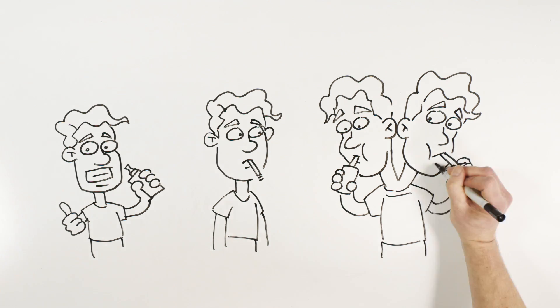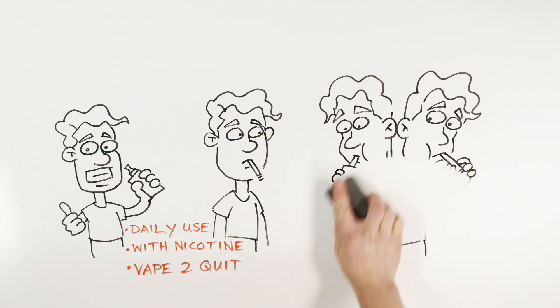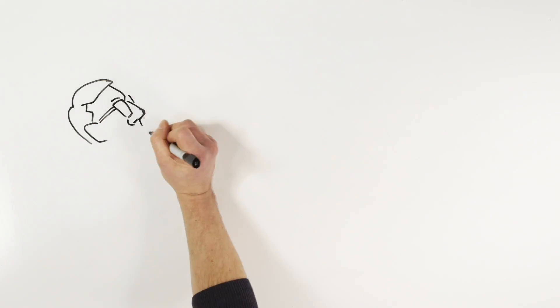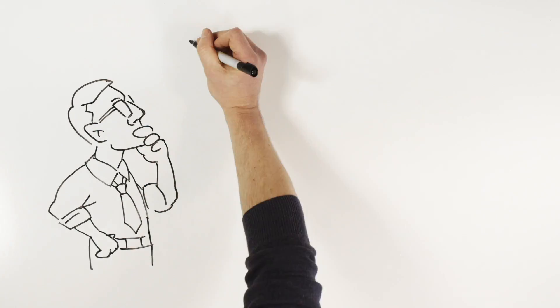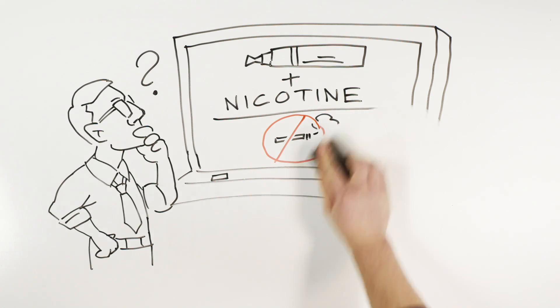Evidence suggests that e-cigarettes may be more likely to help a smoker quit when they are used daily, contain nicotine, and when individuals vape for the purposes of cessation. More research is still needed to identify e-cigarette characteristics that deliver high enough levels of nicotine to really help people quit.